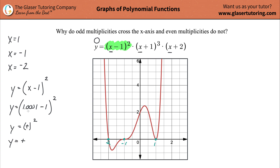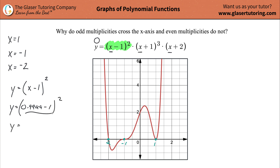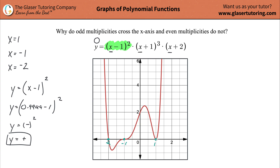Now why don't we investigate what happens to the left of that point? What happens when x is just a little bit less than one — say 0.9999 minus one, squared? The value inside is going to be negative. But if you square a negative number, you get a positive answer. So when the x value is a little bit less than one, the y value will still be positive. No matter what — a little bit to the right and a little bit to the left — the y value will always be positive. That means this function could never cross the x-axis. It's never negative near that point.